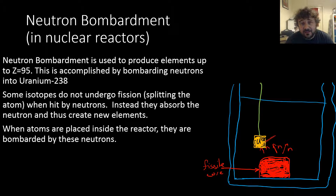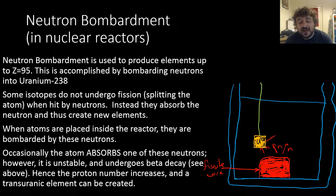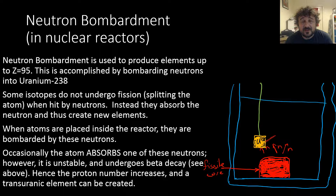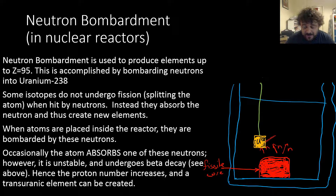When blocks of uranium-238 are placed in the reactor, they get bombarded by neutrons from the fissile core. Occasionally, one of these atoms will absorb a neutron, but it becomes unstable and will undergo beta decay, which produces a proton. This means one of those neutrons turns into an electron — a beta-negative particle — and a proton, and that's how we go up in Z.